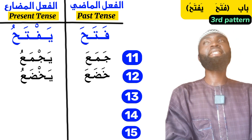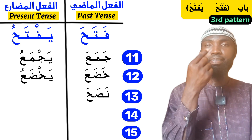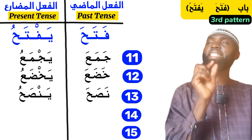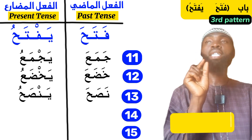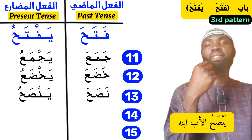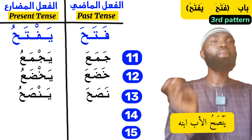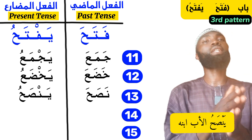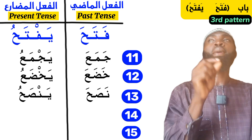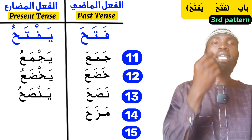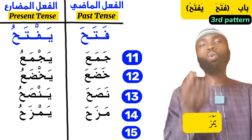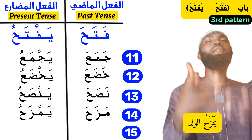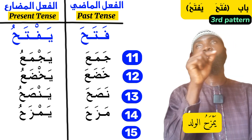Another example under this category is the word nasoha — 'he admonished, he advised.' The present tense is yansohu, meaning 'he is advising.' An example: yansohu al-abu abnahu — 'The father is advising, admonishing his son.' So nasoha yansohu also falls under the category of fataha yaftahu. Another word is mazaha — 'to joke, he joked.' The present tense is yamzahu. An example: yamzahu al-waladu kathiran — 'The boy jokes a lot.'